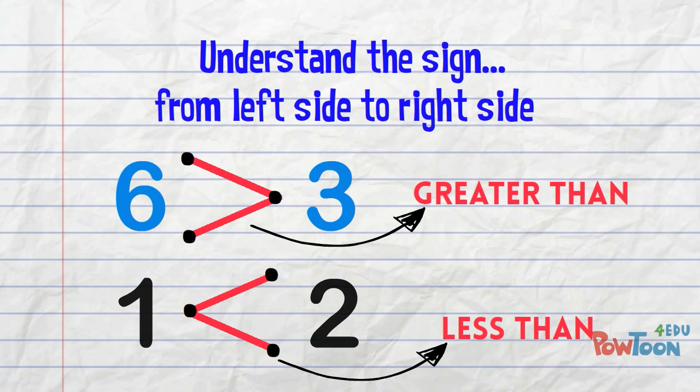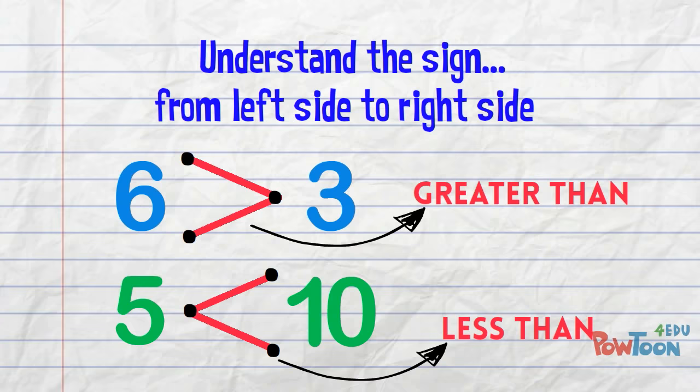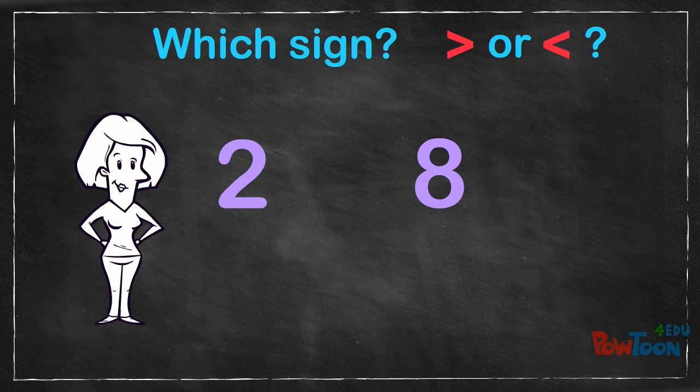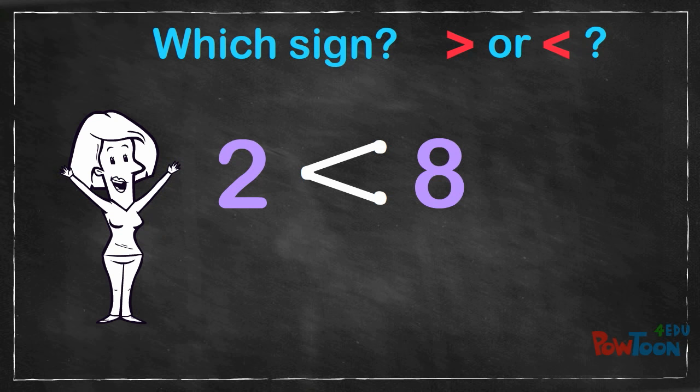Here's another example. You can use this thinking to get it right every single time! Which sign do we use with these numbers? Well, put 2 points beside the bigger number and 1 beside the smaller number. Join the dots and we've instantly got the correct sign! This statement reads 2 is less than 8.